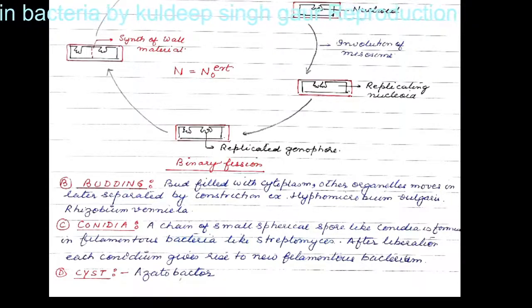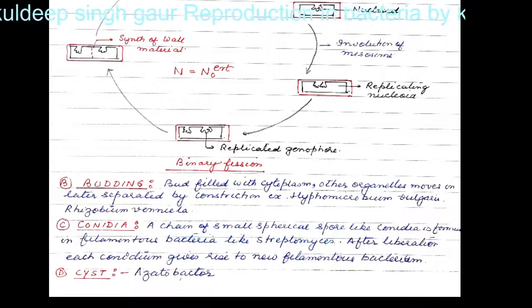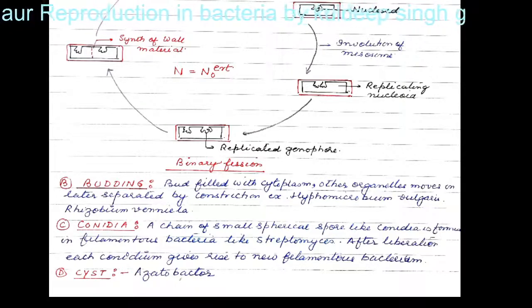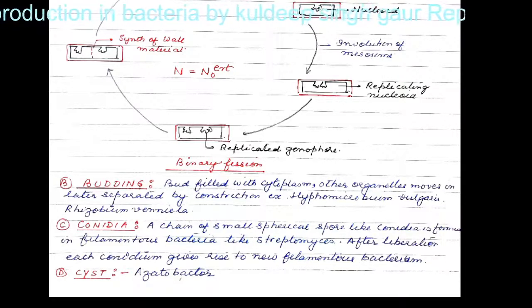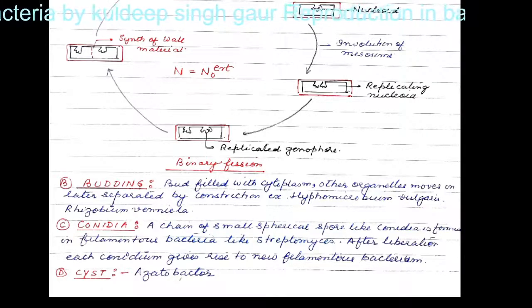The next mode is budding. This is also a simple method of reproduction. The bud gets filled with cytoplasm and other inclusions of the cytoplasm like membrane-bound vesicles move inside the bud. Later, a constriction gets developed, which deepens further, and the bud gets separated from the parent cell. Examples include Hypomicrobium vulgare and Rhizobium vanilla, which reproduce asexually by budding.